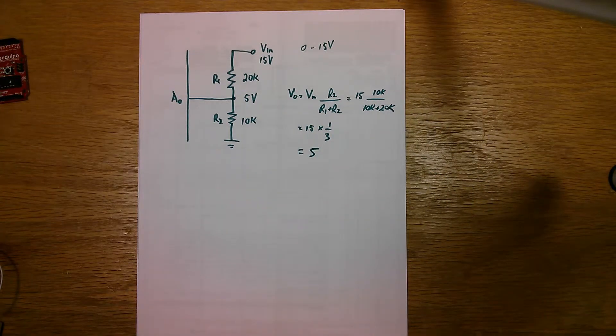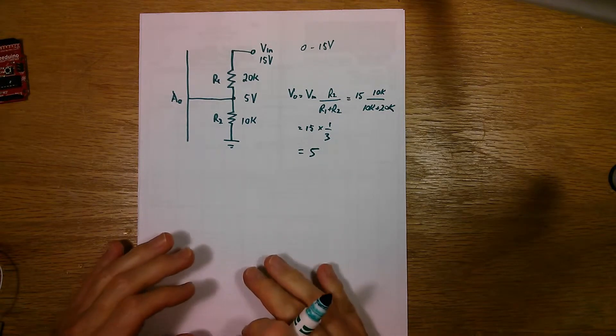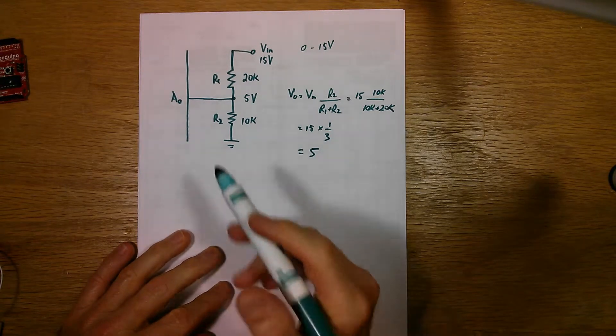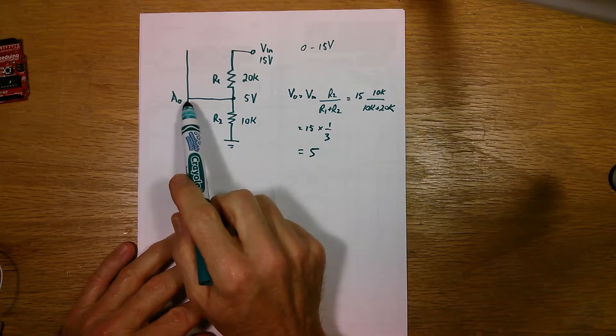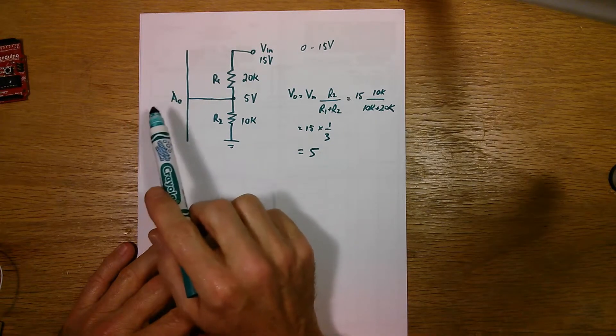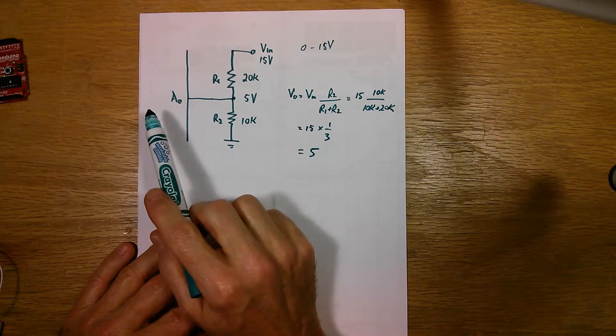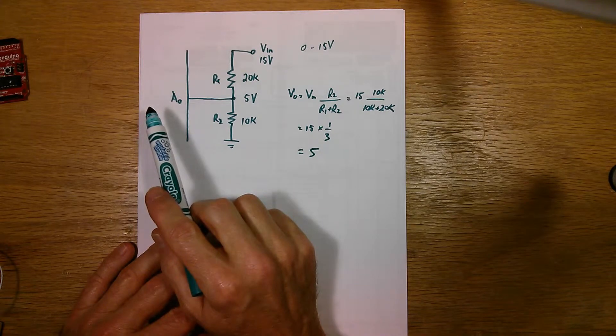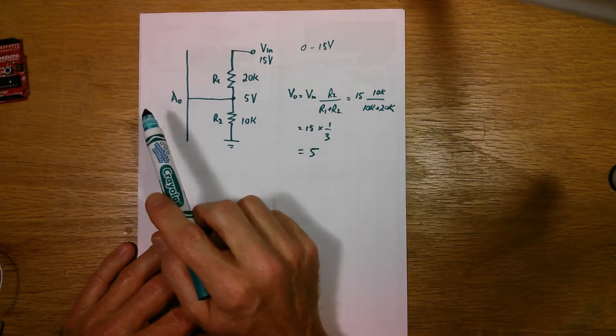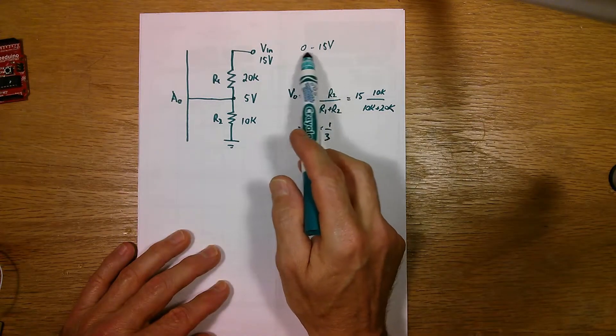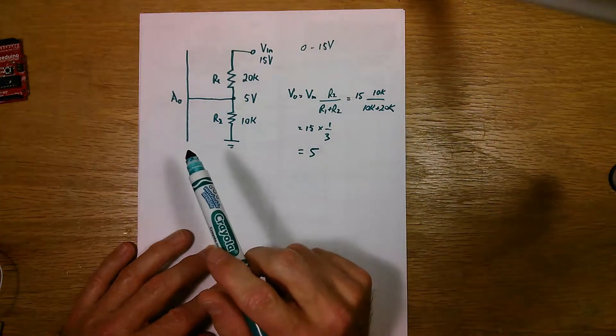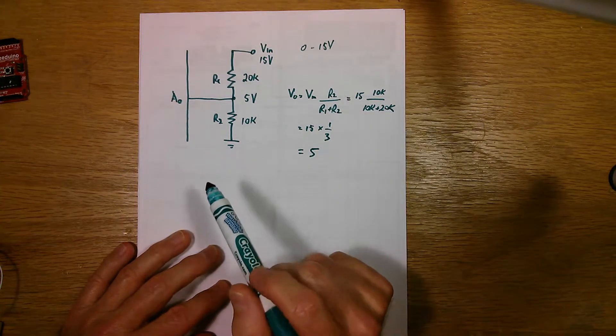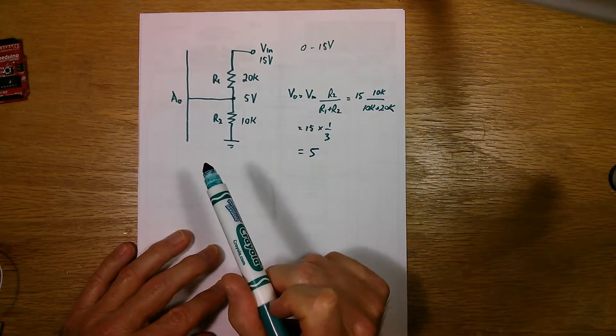Now I mentioned earlier that there will be some calculations required in the software to convert this value that comes out of the analog to digital converter, which is in the range of 0 to 1,023 into a number that represents 0 and 15 volts. And in an upcoming tutorial on the software, I'll discuss that further.